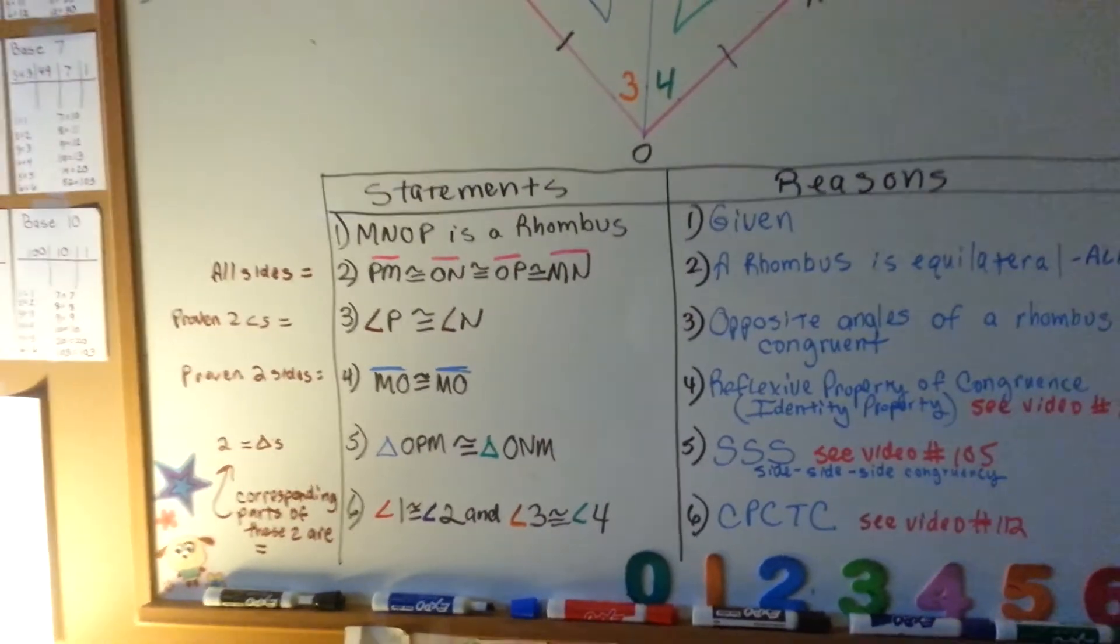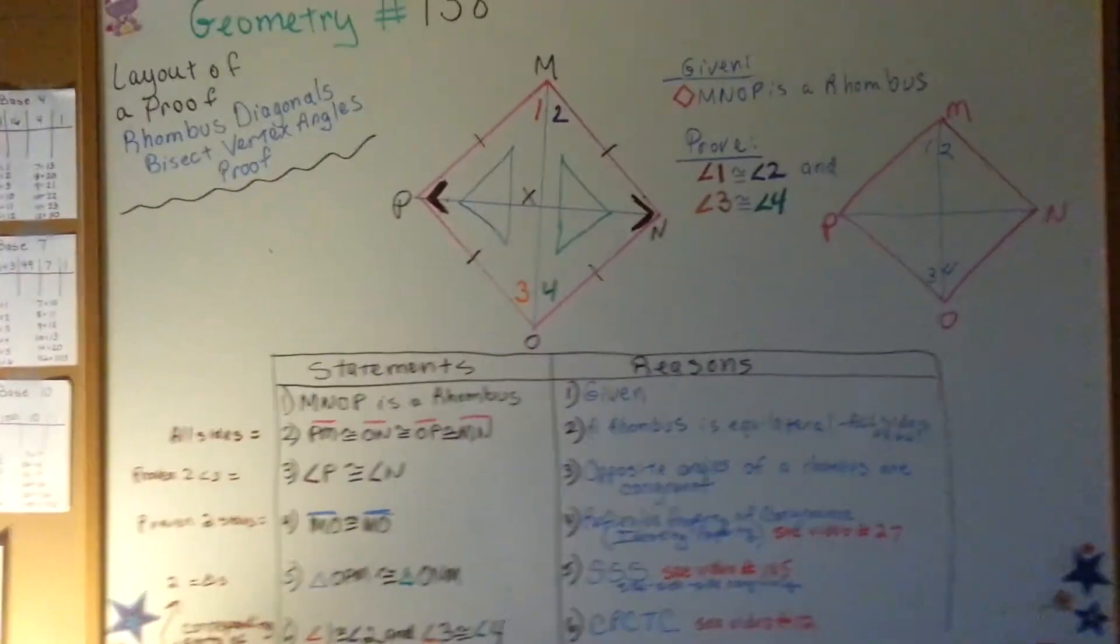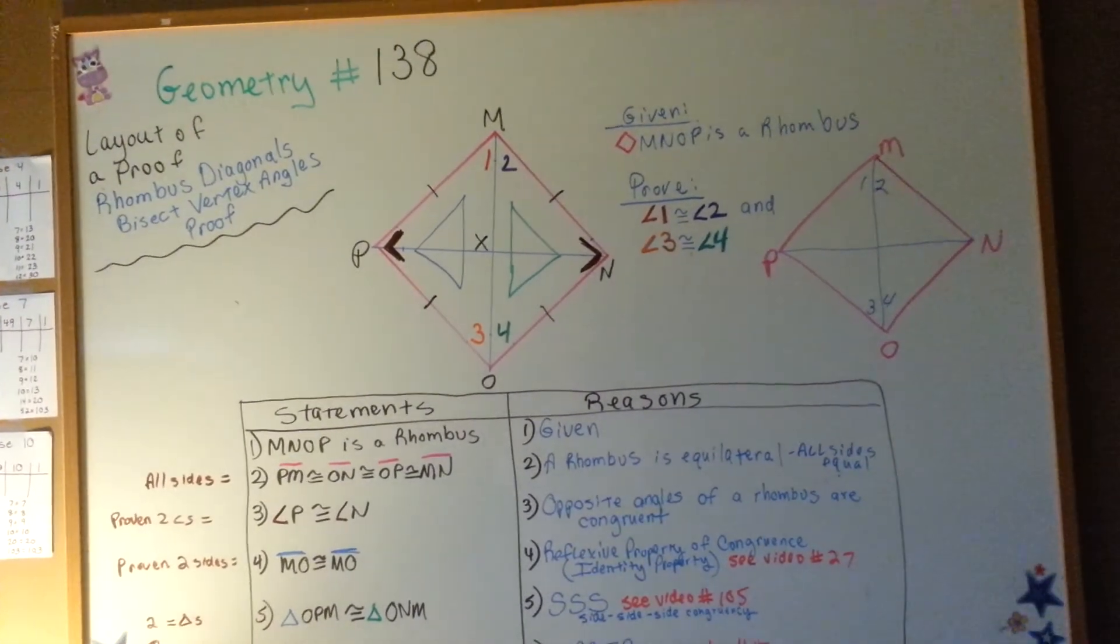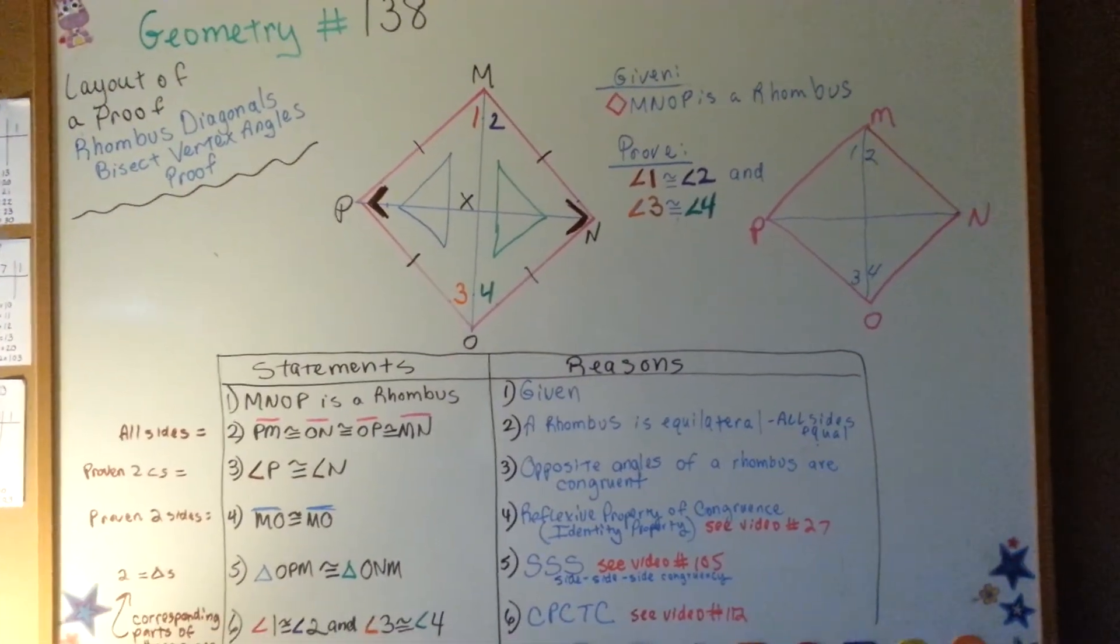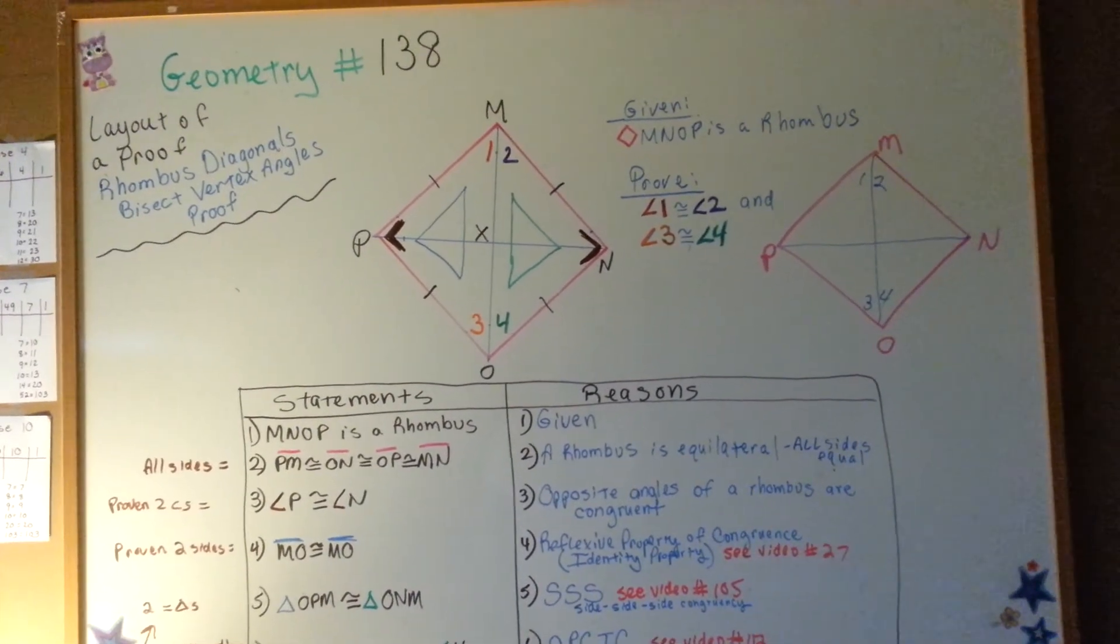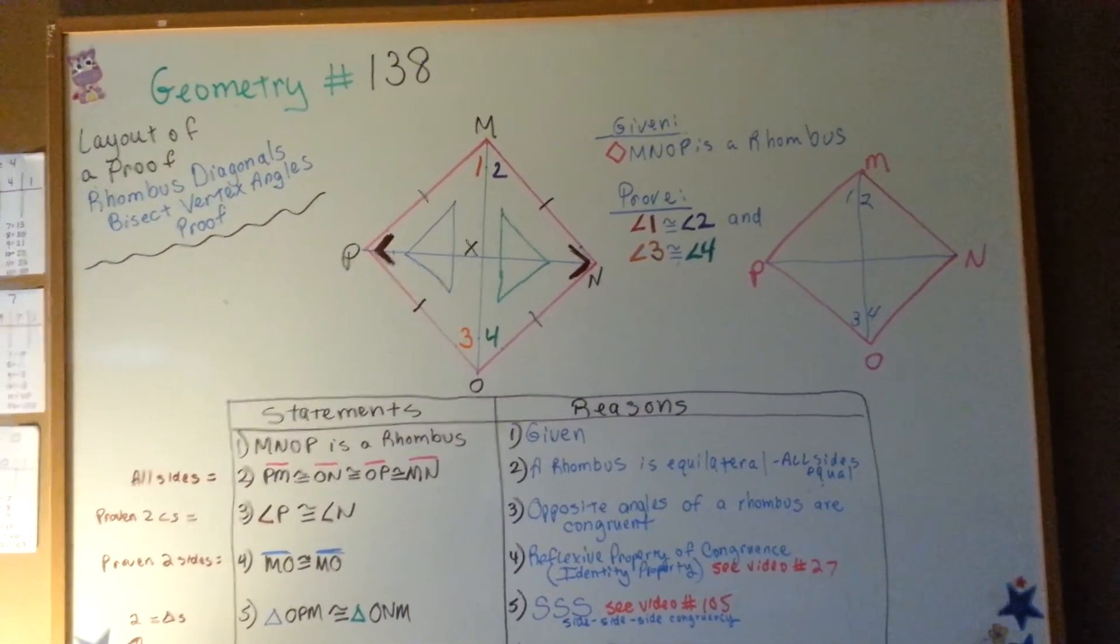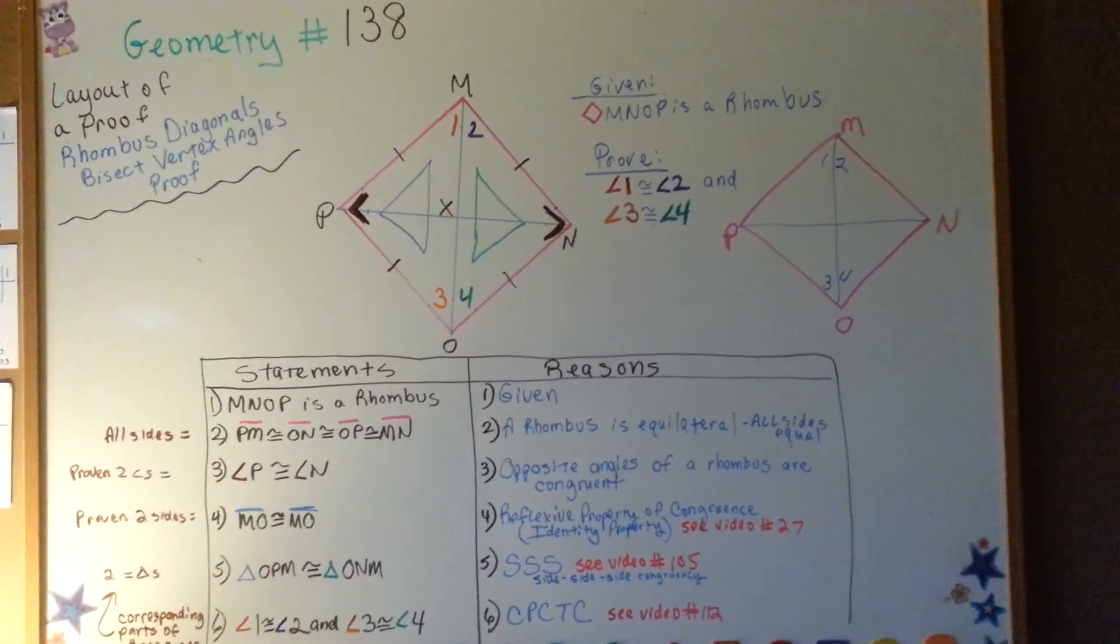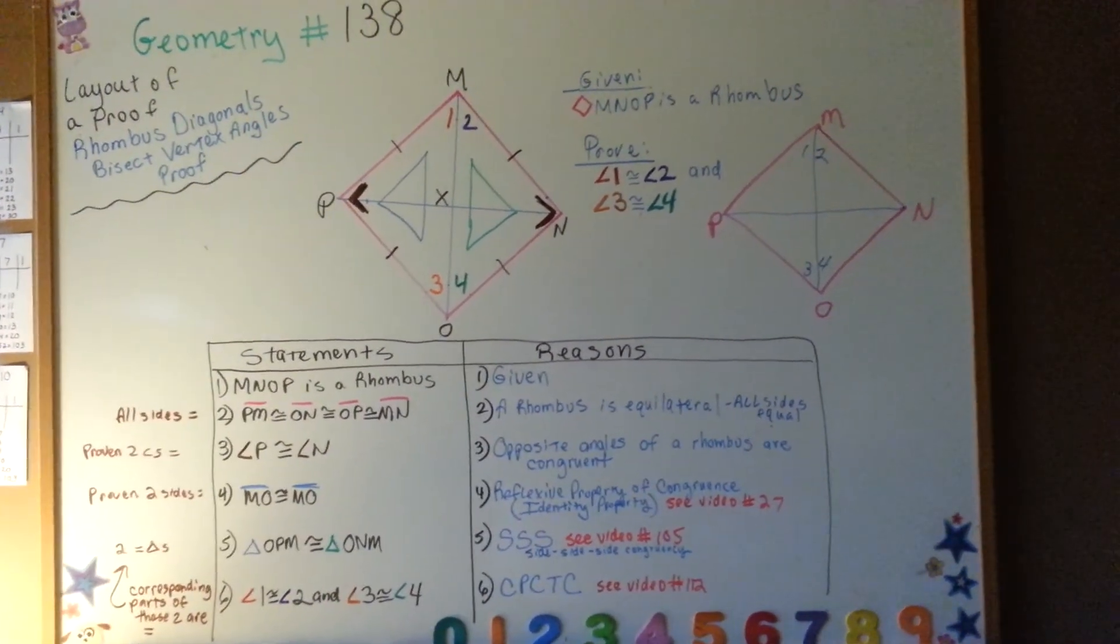That's the layout of a proof for a rhombus diagonals bisect vertex angles. What we're going to do next is a proof for a rhombus diagonals form congruent triangles. I hope to see you there and I hope this helped you.